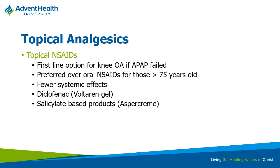We also have topical analgesics. The benefit of topical therapy is reducing systemic toxicity. Topical NSAIDs can be really good, especially if just one joint or a relatively small number of joints is affected. The downsides of topical products are that they may not be as effective for diffuse disease where a lot of joints are affected. You can also see some skin irritation and dermatitis.